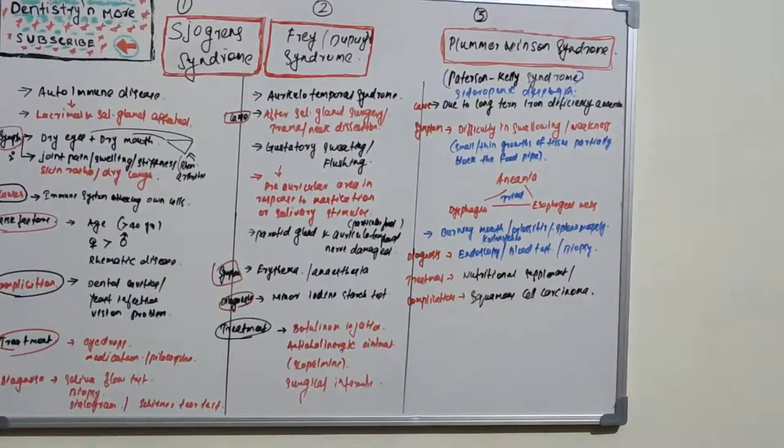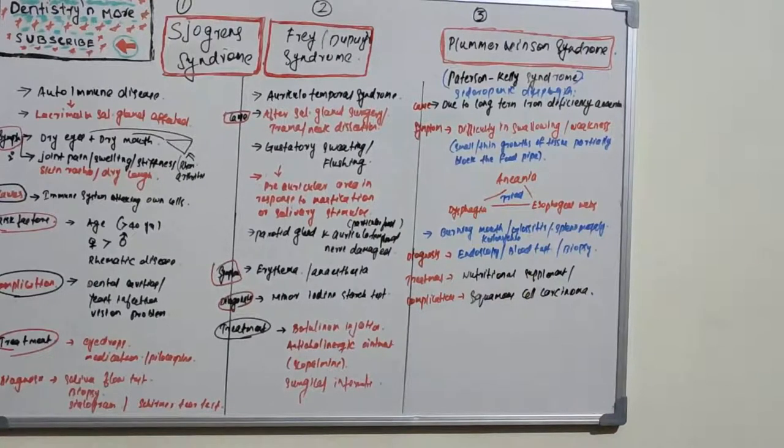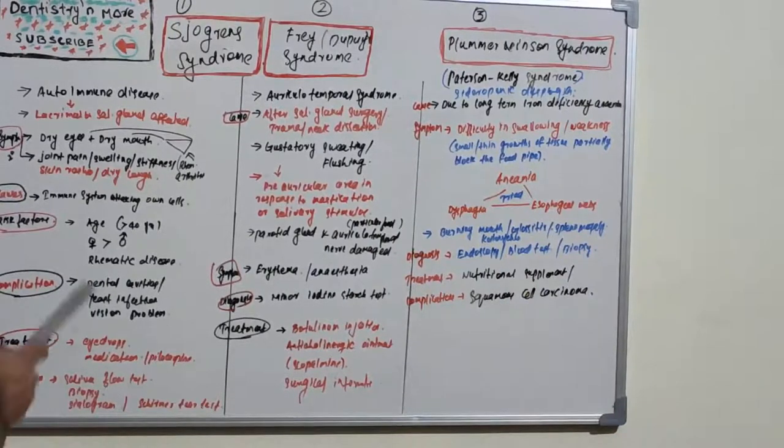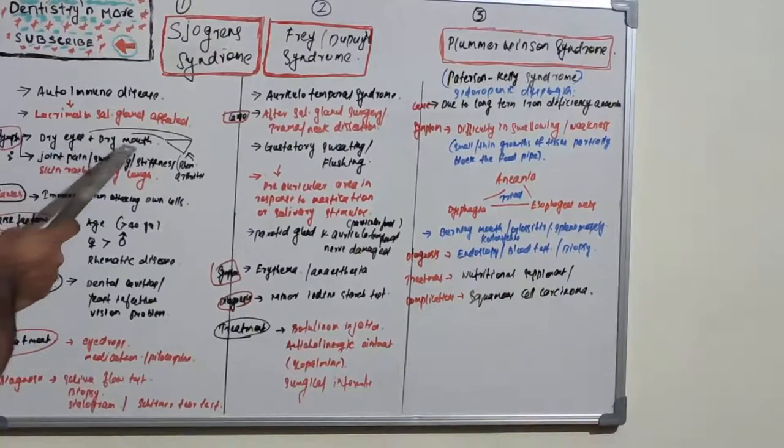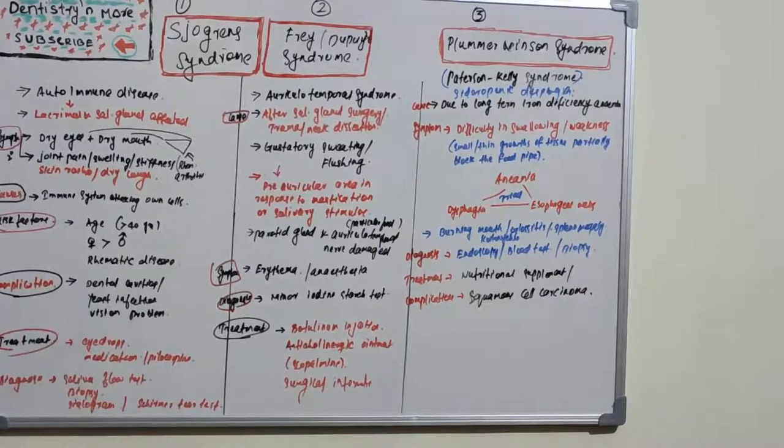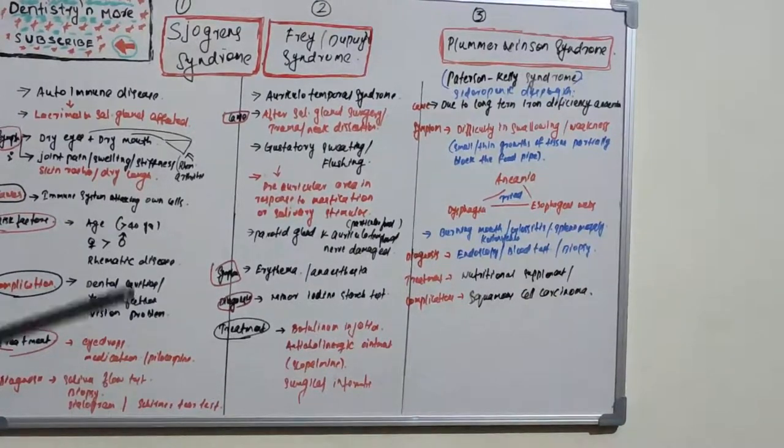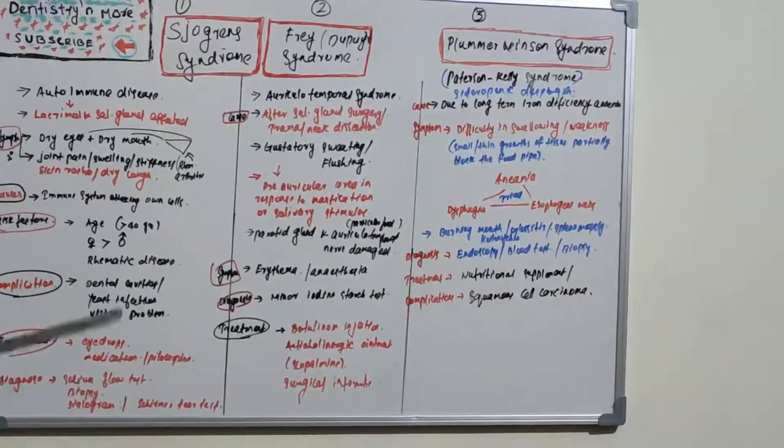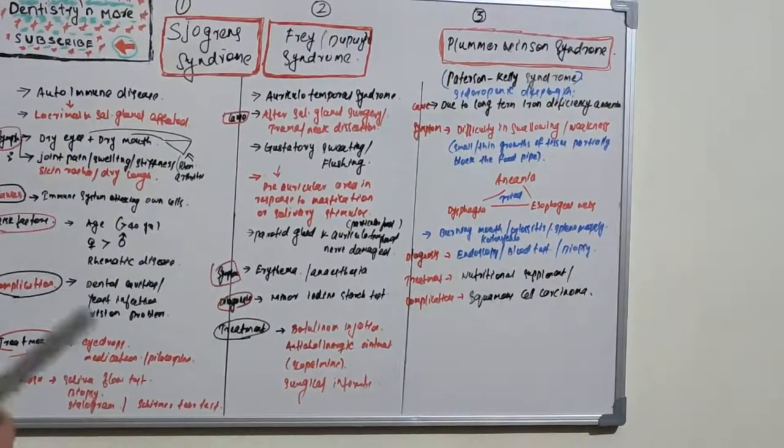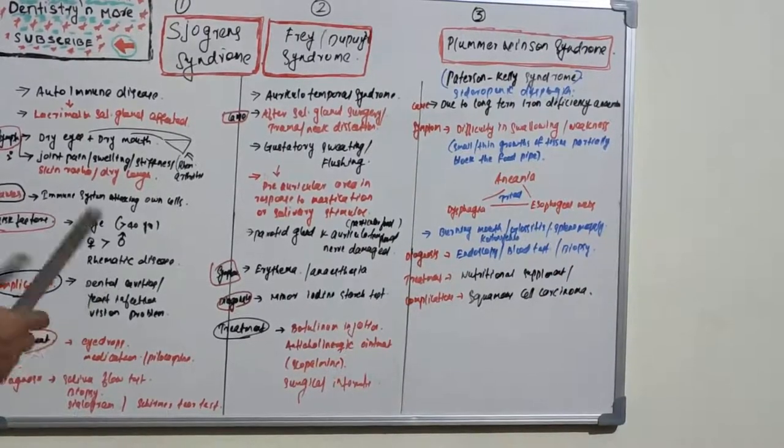What are the complications? It has problems with production of saliva and tears, so there will be dental cavities. The saliva keeps the mouth clean by its flushing action. When saliva is less, there will be more chance of caries and also yeast infection. Since there are dry eyes, there will be problems with vision.